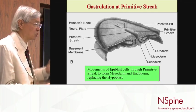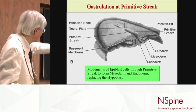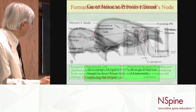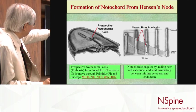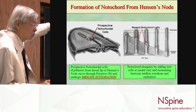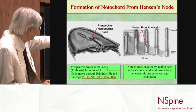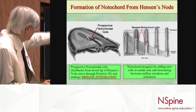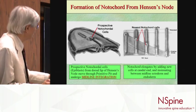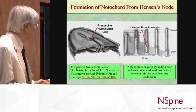During gastrulation, there is one other important process: Hensen's node, where prospective notochord cells come from the tip, go through a midline hole called the primitive pit, and form the back end of the notochord. New notochord cells are added at the back end, pushing old cells forward, so the notochord increases by adding new cells posteriorly and extending forward.